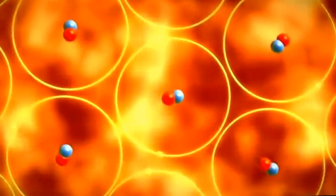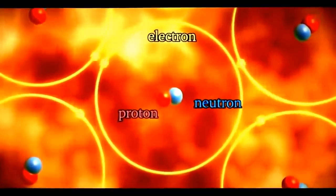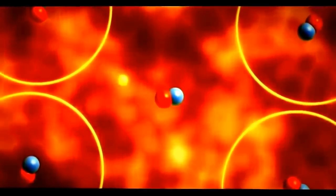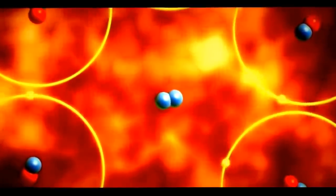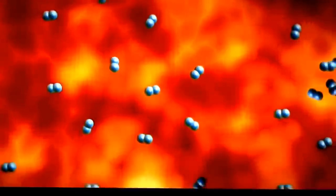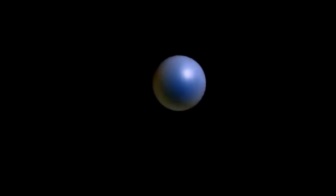It explodes as a supernova. In the middle of it all, the atoms that make up its matter are subjected to tremendously violent forces. The orbits of particles disintegrate. Electrons and protons fuse together, creating neutrons, which rapidly condense in volume.